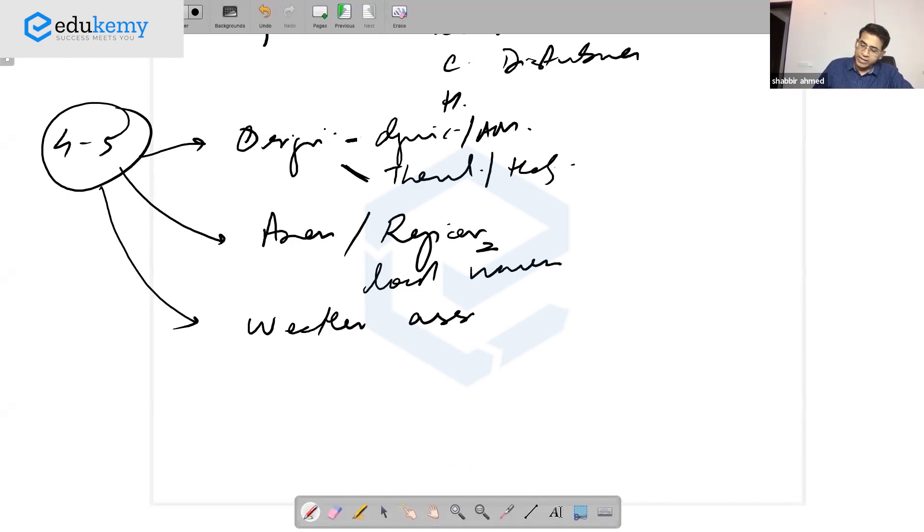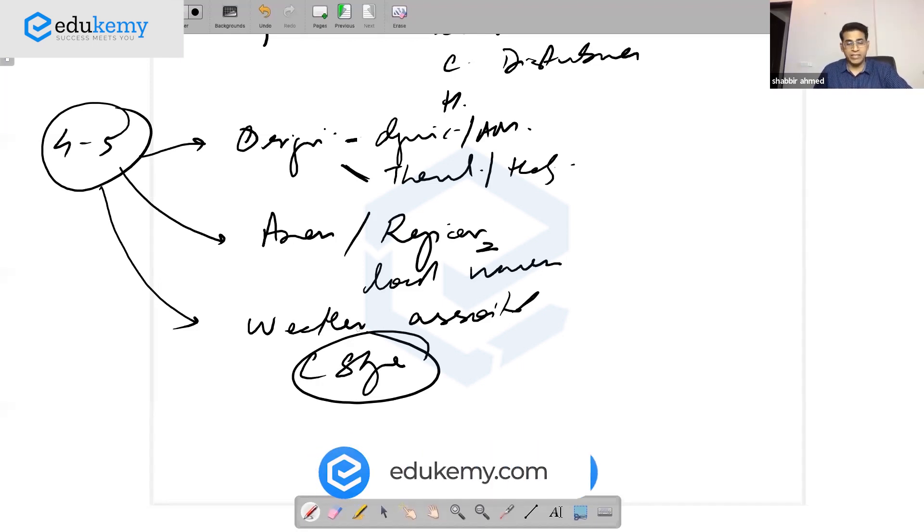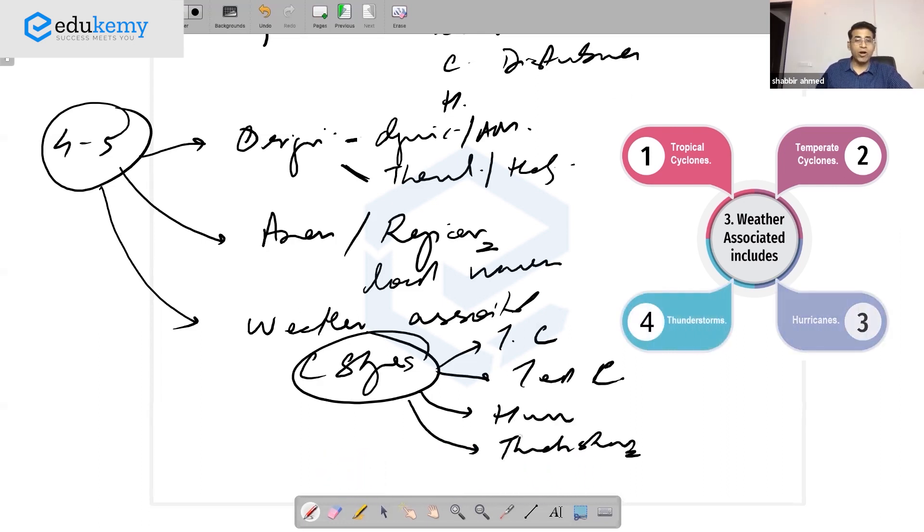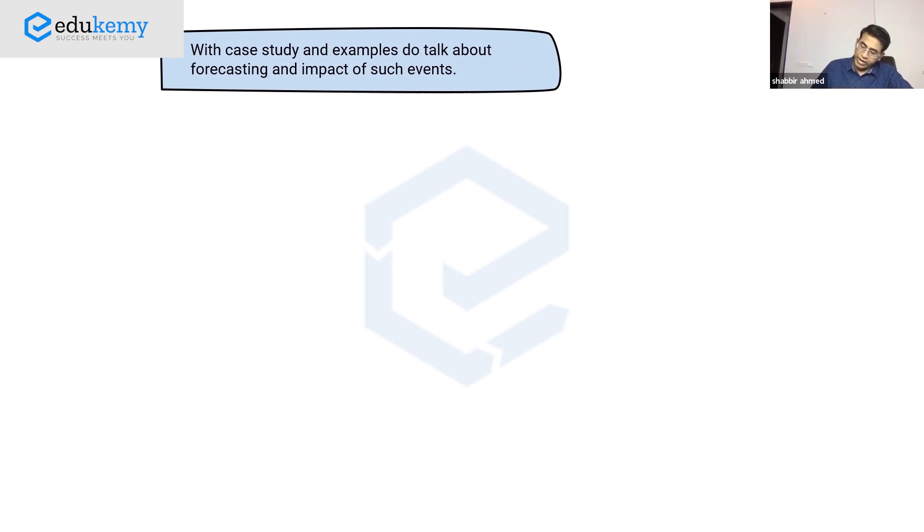Talk about the origin, the region, and wherever possible some local names. Discuss the weather associated or its stages. Invariably, none of these extreme events are random - they're part of stages. Whether tropical cyclones, temperate cyclones, or hurricanes, they all have stages. Then include case studies and examples, discuss forecasting and impact of such events, or in conclusion link it towards global warming and increased intensity.